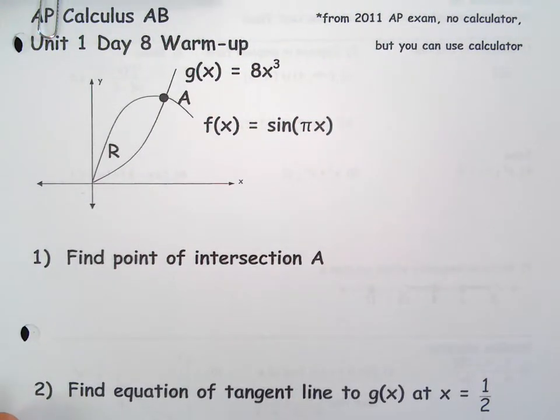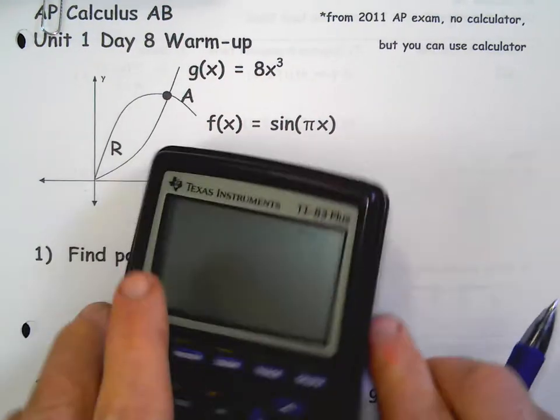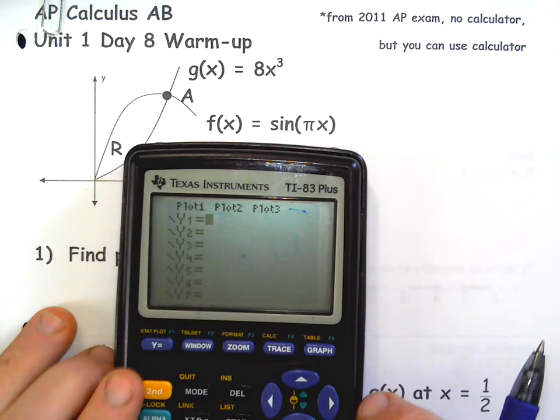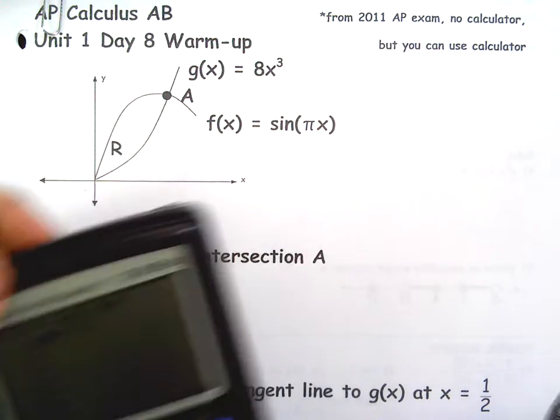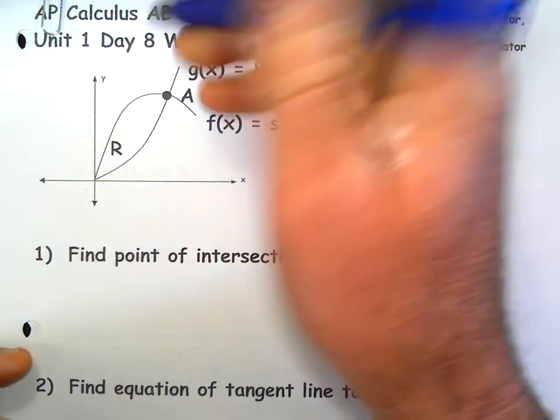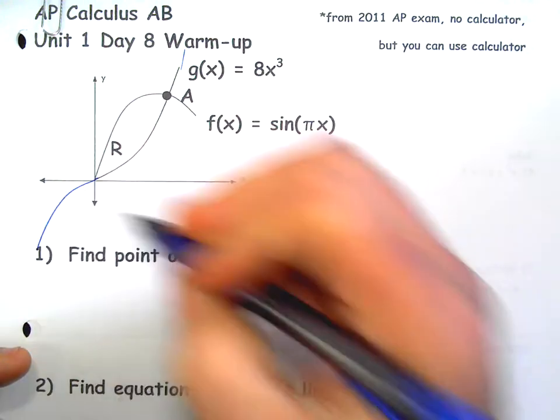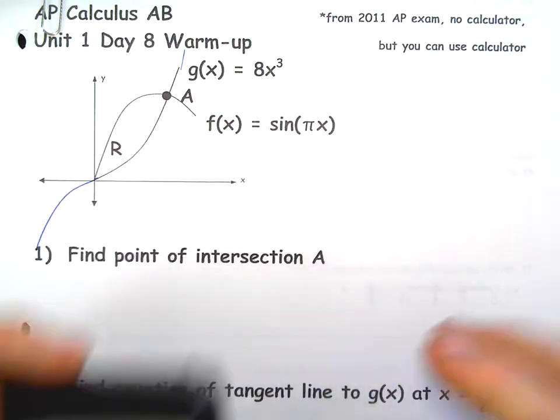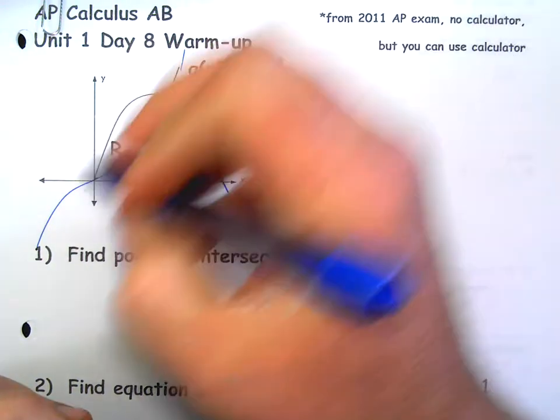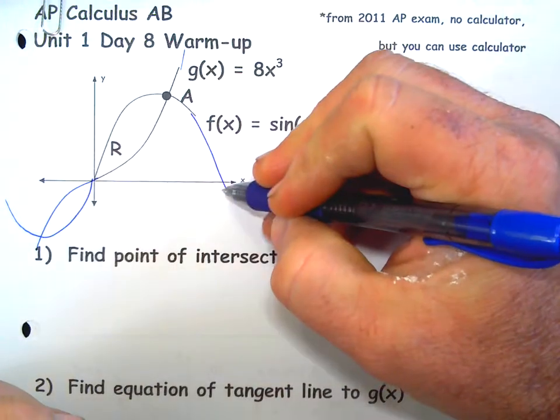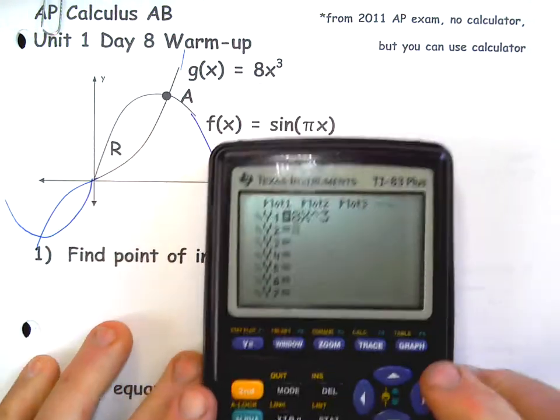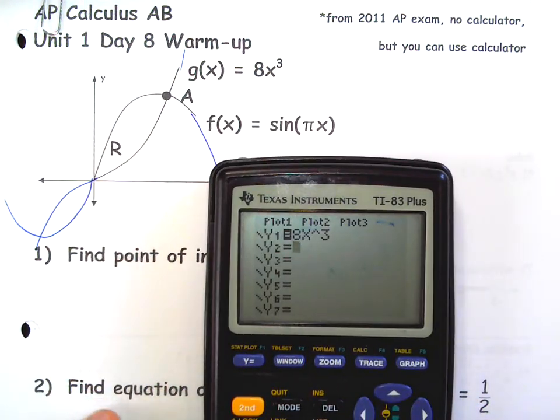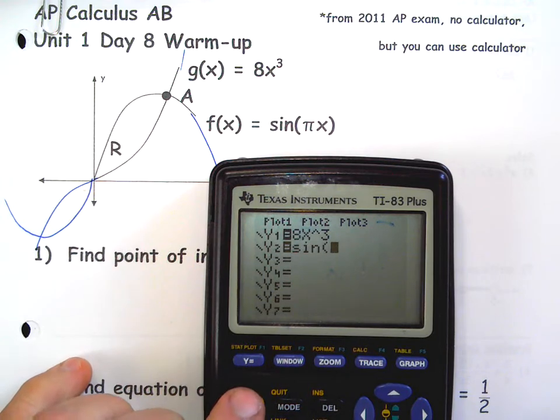Find the point of intersection A. Let's go ahead and put these equations into our calculator. 8x cubed, which is a cubic by the way. Cubics are going to kind of look like that if you keep going. And the next one is a sine curve. Sine curves go like that, right, and keep going. It's just good to know your functions. Now you better be in radian mode, otherwise it's going to look a lot different.